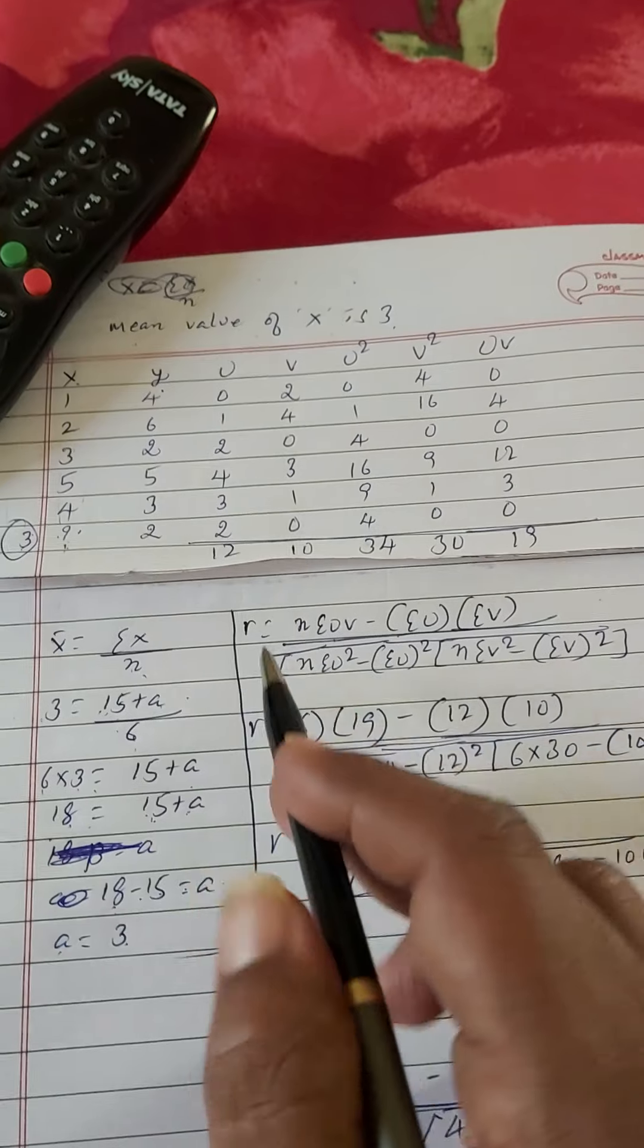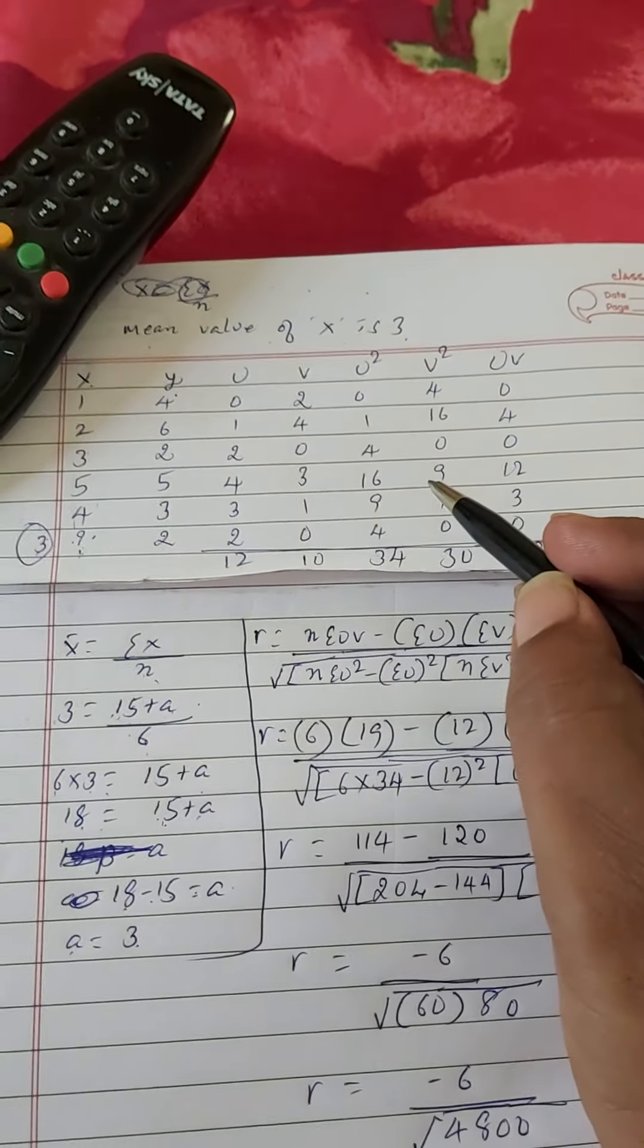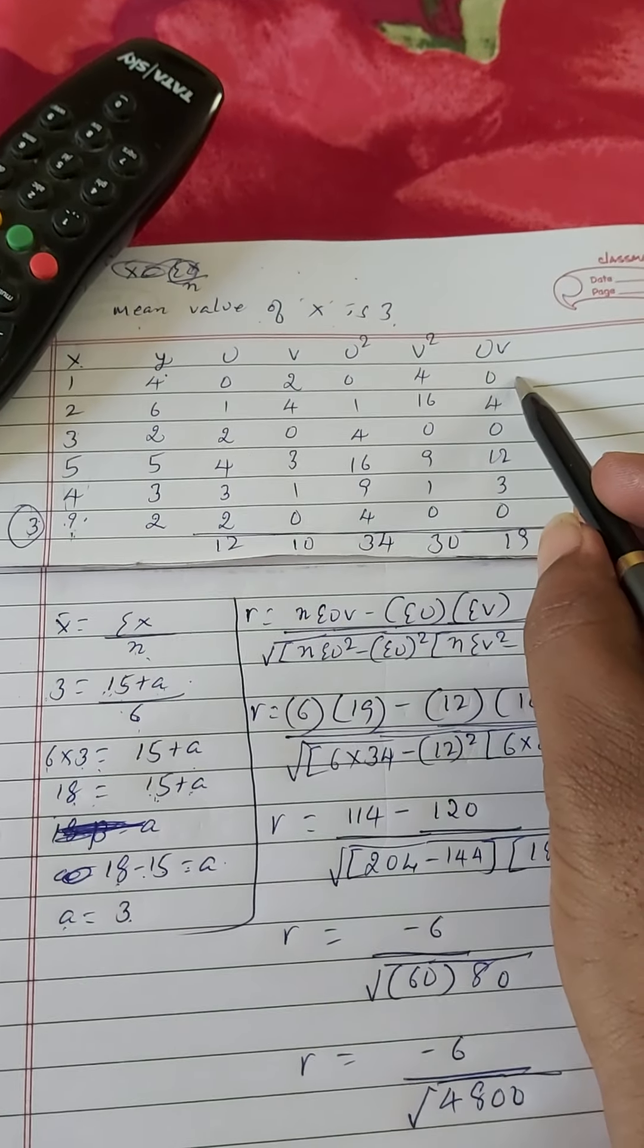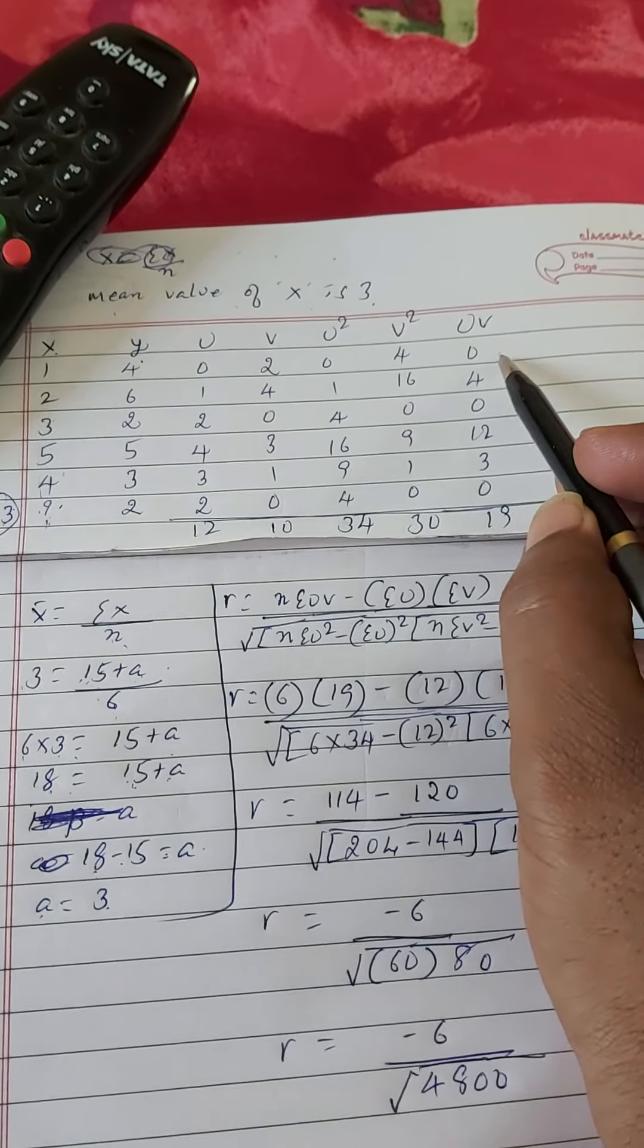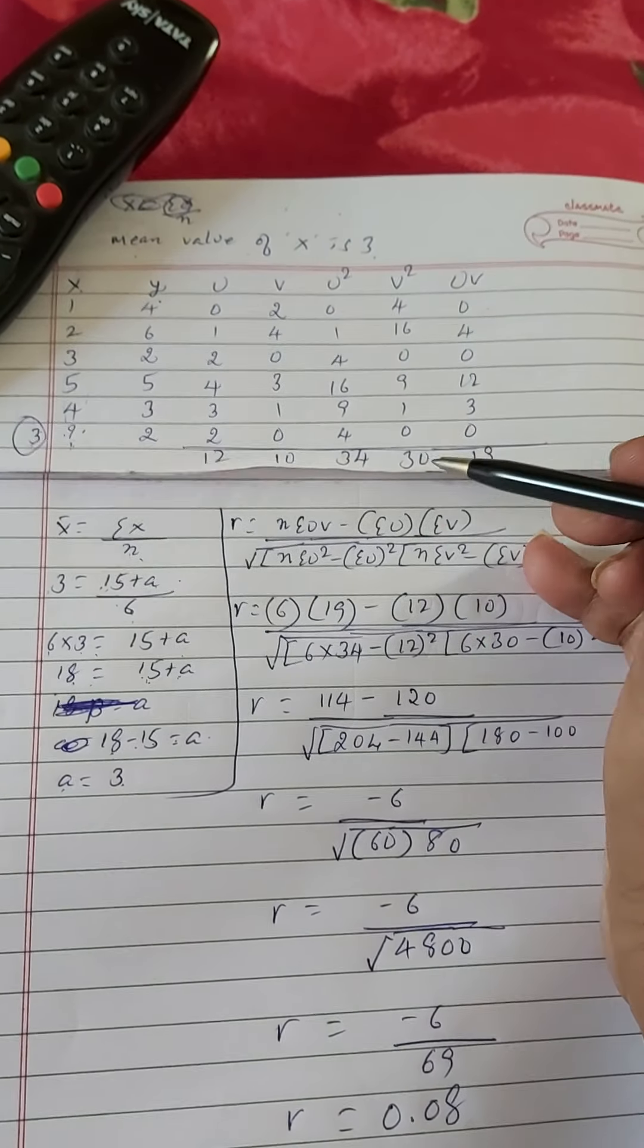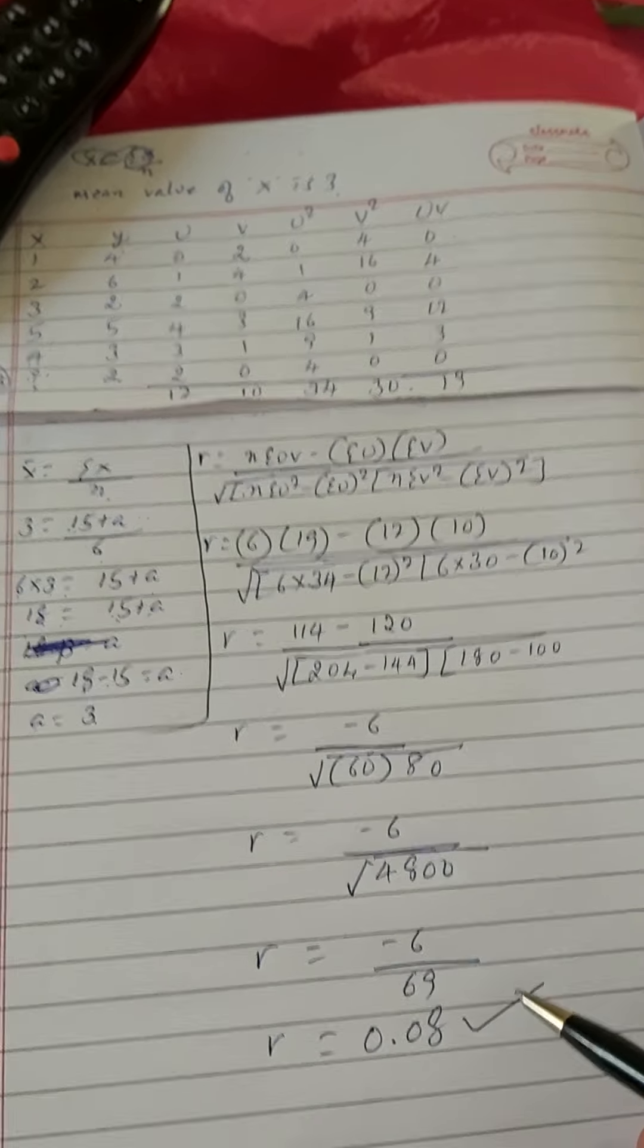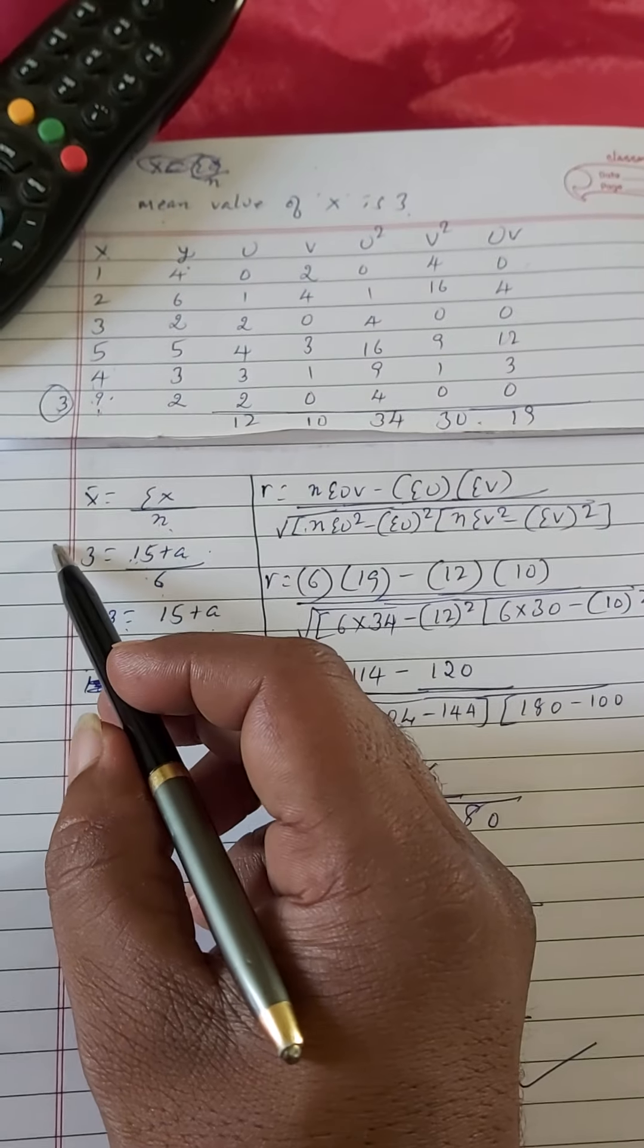Total of x values apart from this question mark are 15 plus question mark. We have to add but we don't know the value of this question mark, so therefore let it be written as 'a'. 15 plus a divided by n, where n is equal to 6, the number of observations.